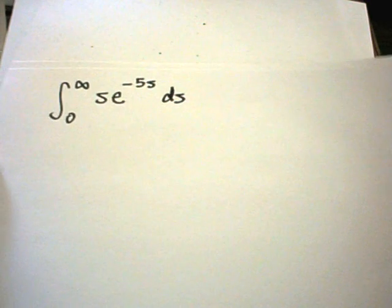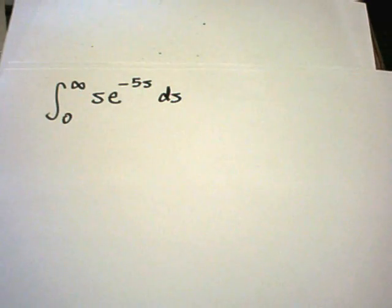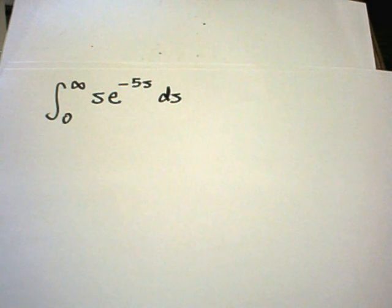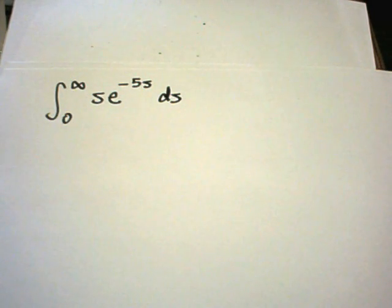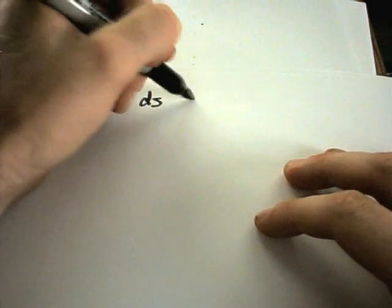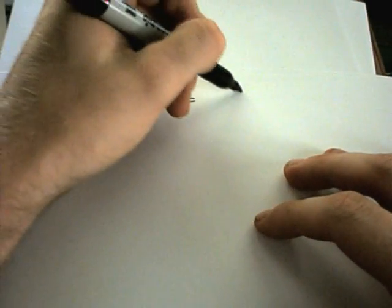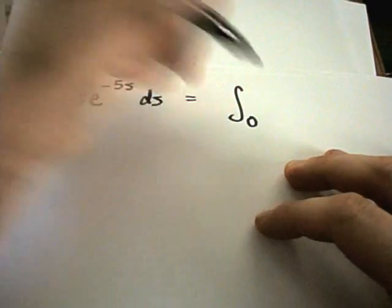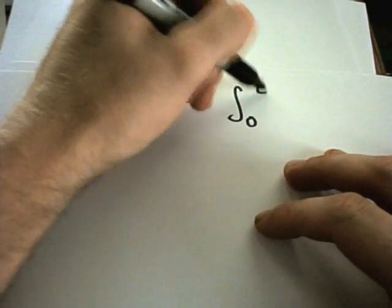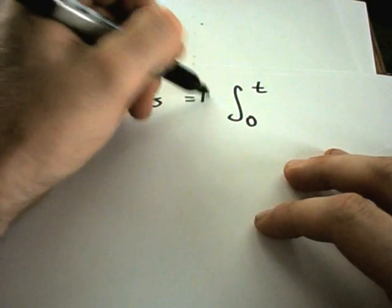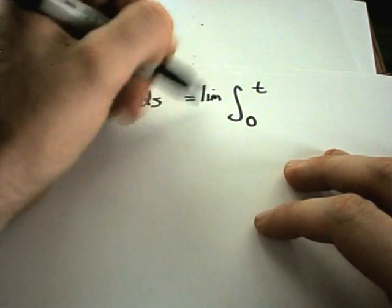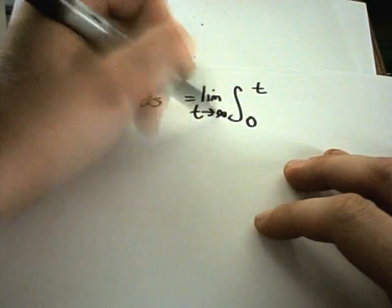In this example I'm going to do another improper integral. This one's going to be a little trickier — there's a lot of stuff going on in this problem. To get started, wherever the infinity part is, just replace that with a t and write the limit as t goes to infinity.